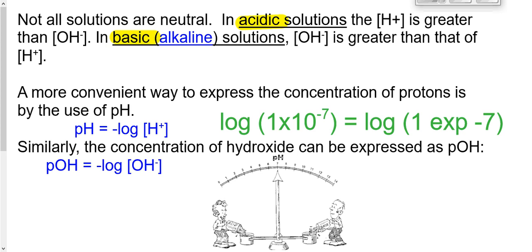We'll always write numbers in the form 1×10⁻⁷, though calculators use a slightly different notation. Please don't write numbers the way a calculator displays them — writing it that way would be like actually saying the letters 'L-O-L' out loud instead of laughing. Either way, when we enter 1×10⁻⁷ into our calculator, we get a value of -7.